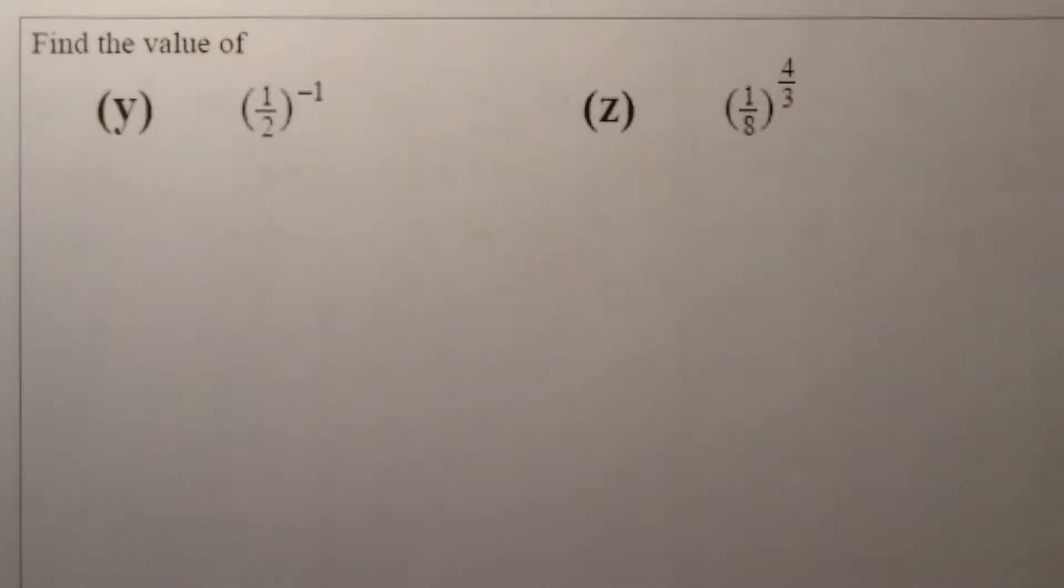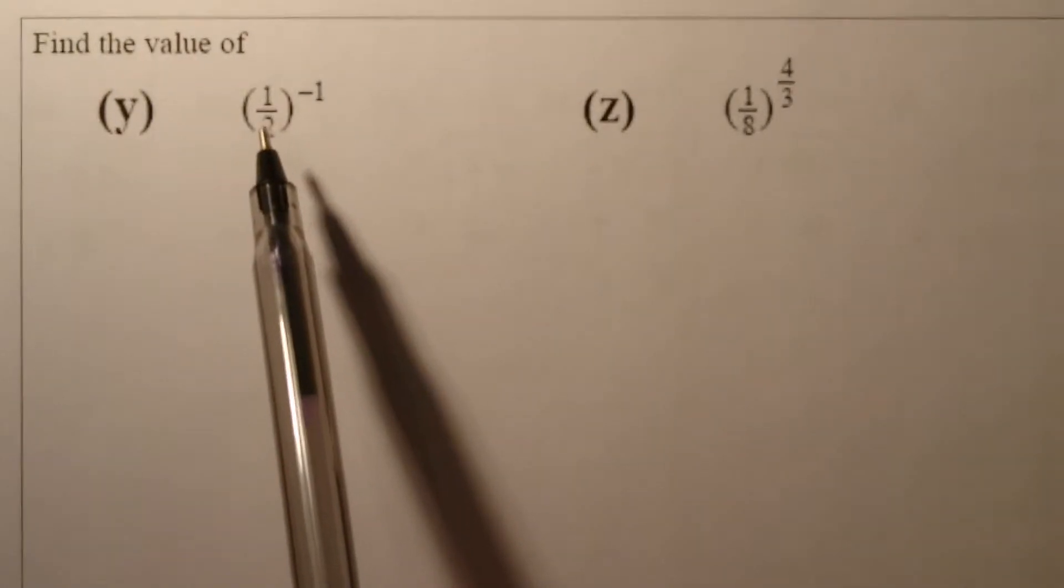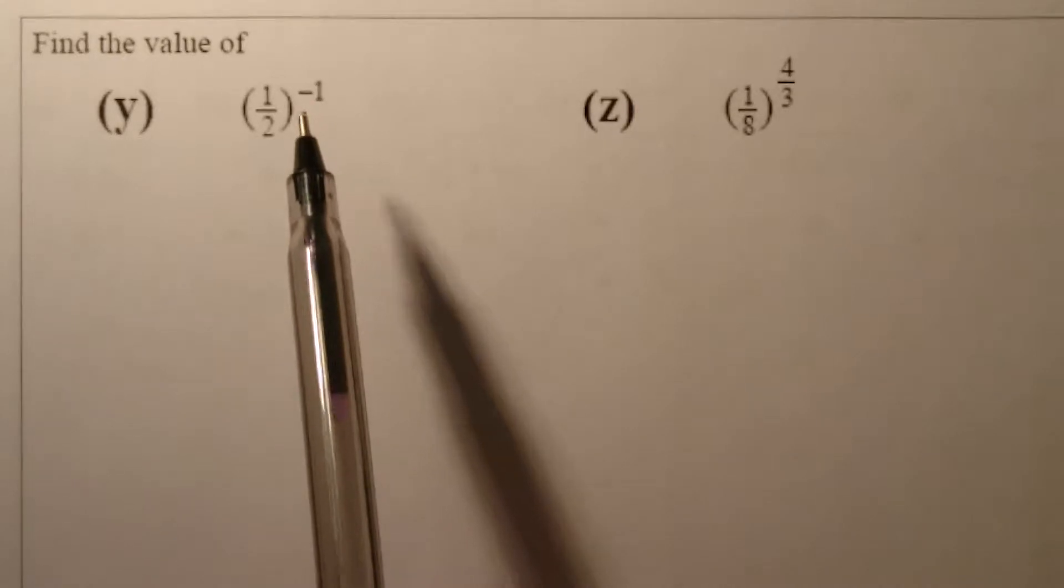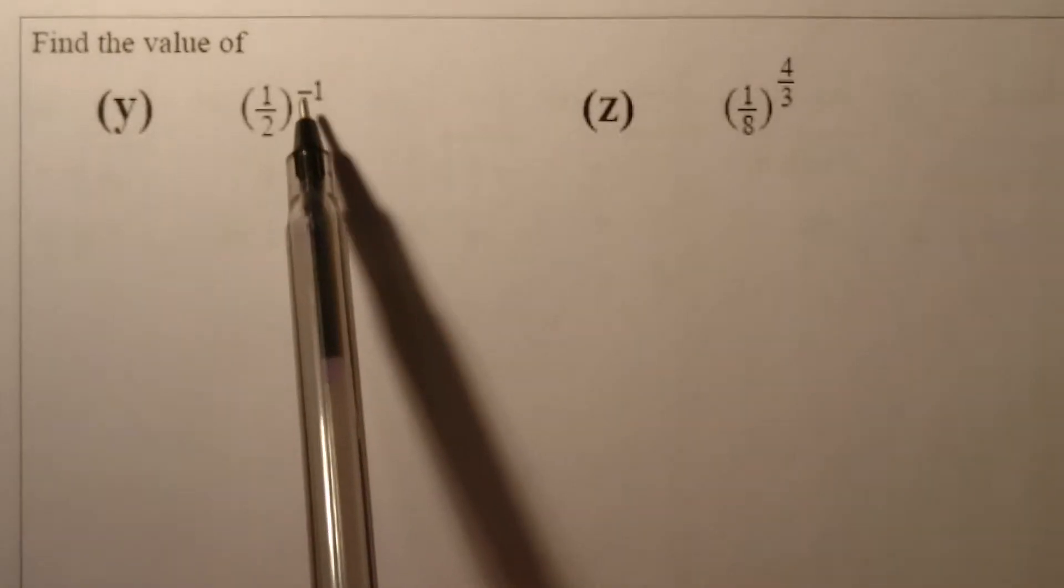Right, these two are reasonably complicated. What we've got first of all is a half, and that's to the power of minus one. So what we'll do with that first of all is deal with that minus sign.